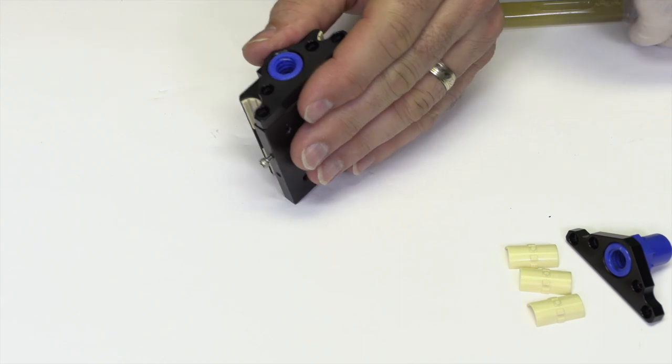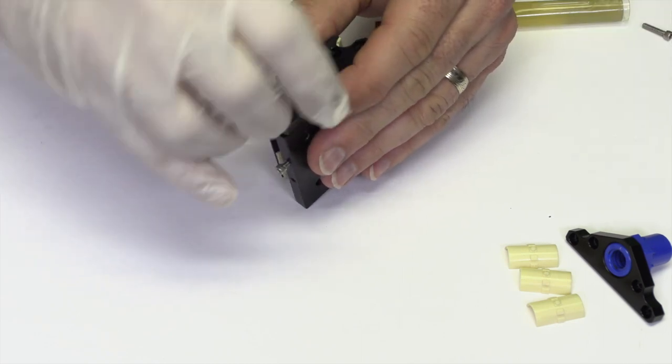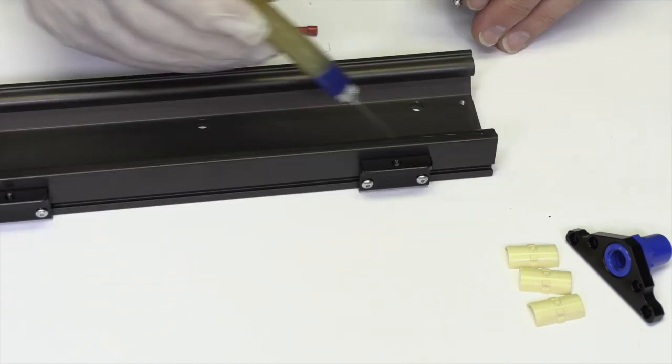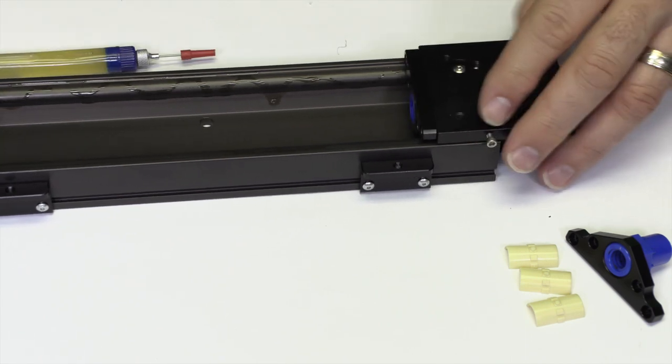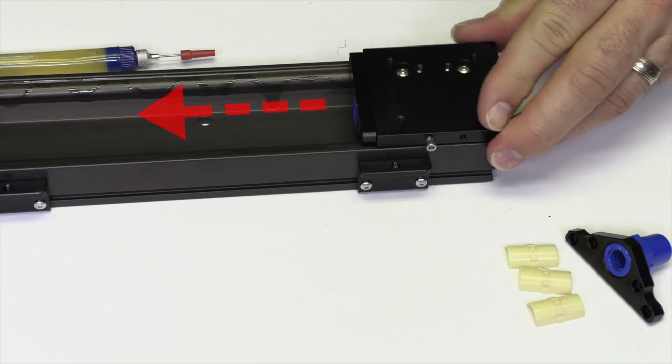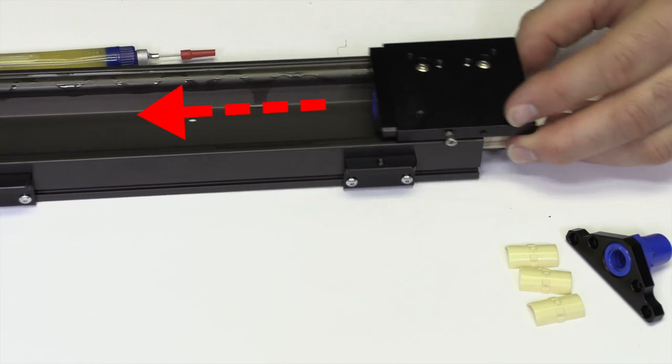Loosely assemble the lead screw nut assembly onto the carriage with the original mounting screws. Apply a small amount of lubricant to the base rails. Slide the carriage back onto the base rails. The lead screw nut should be facing the motor side of the slide.